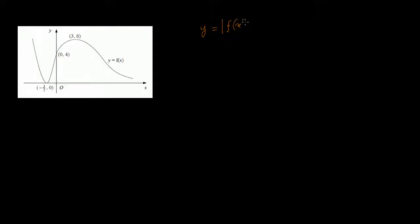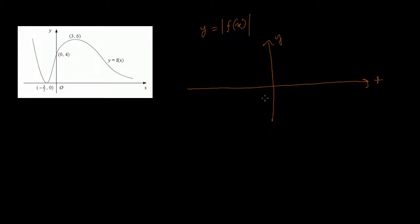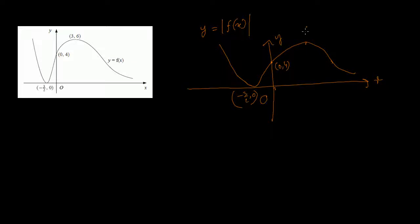Let's do another example. We have this f(x) and we need to do y equals absolute value of f(x). If you notice, the entire picture is above the x-axis. That means we don't have to do anything — the absolute value of f(x) and y equals f(x) will have the same picture because there is no negative y. So the sketch is just a copy of the original. In exams, they sometimes give a sketch where you have to do nothing, but you must remember the technique. The key points are minus 3 comma 2, 0 comma 4, and 3 comma 6.